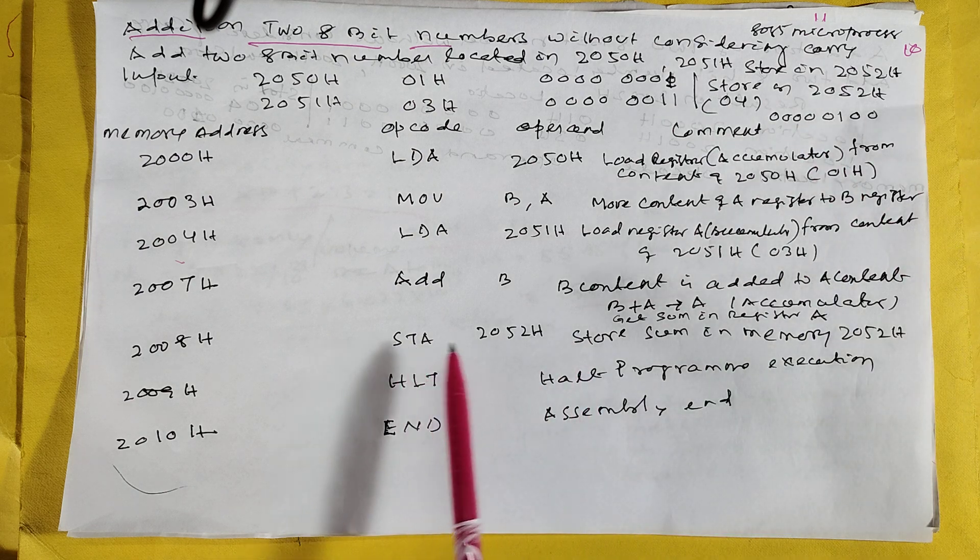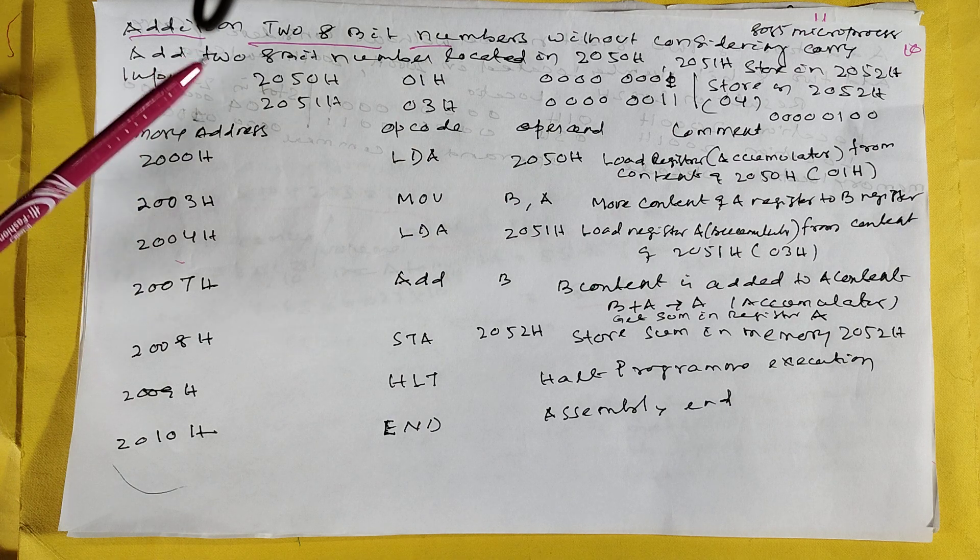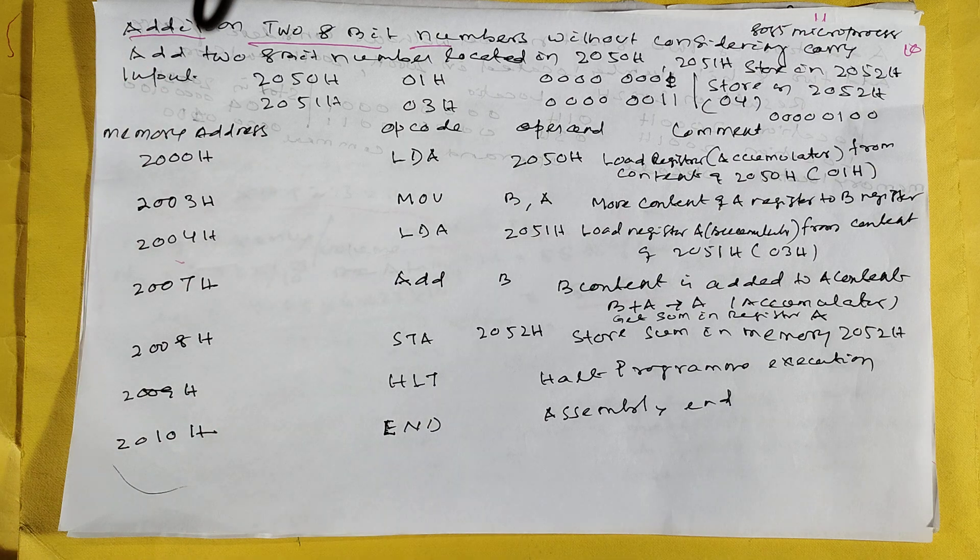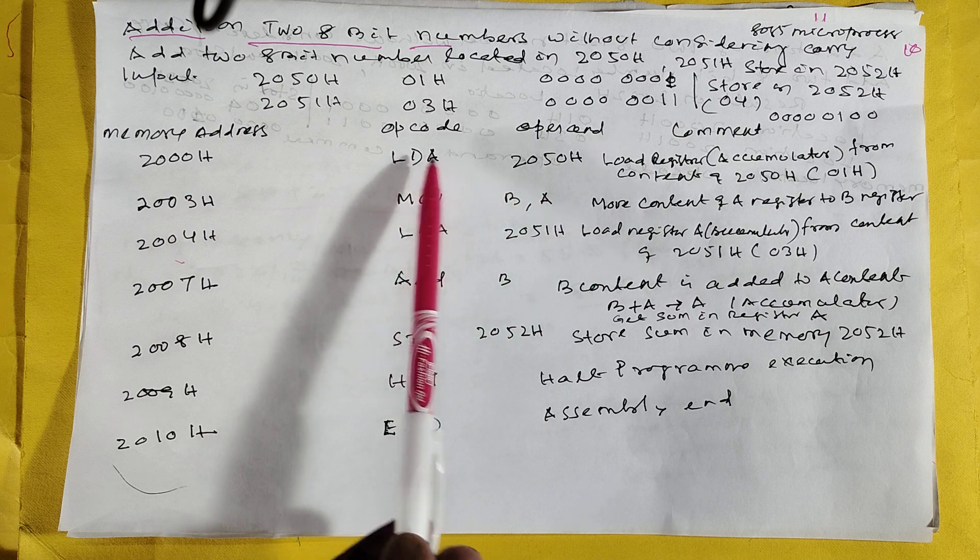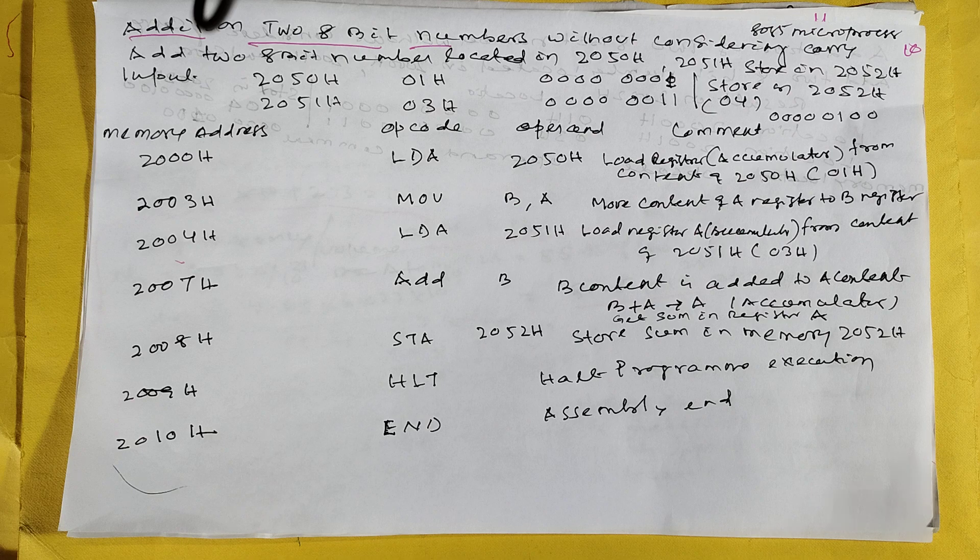Then load storage, storage to 2052. It is telling two numbers are there, 2050 and 2051H, and stored in 2052H. This is the general standard procedure. One thing he will tell: 2052, this is LDA at 2053H, store at 2000. According to what is mentioned.